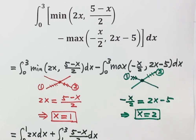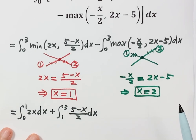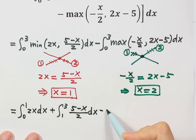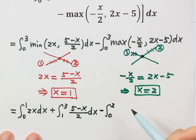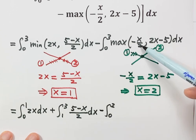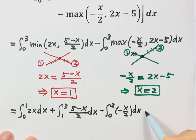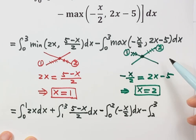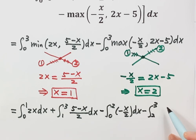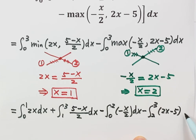So we write the second integral — with a minus sign — into two parts: from 0 to 2, function 1 is bigger, so that's negative x over 2; then from 2 to 3, function 2 is bigger, so that's 2x minus 5, dx.